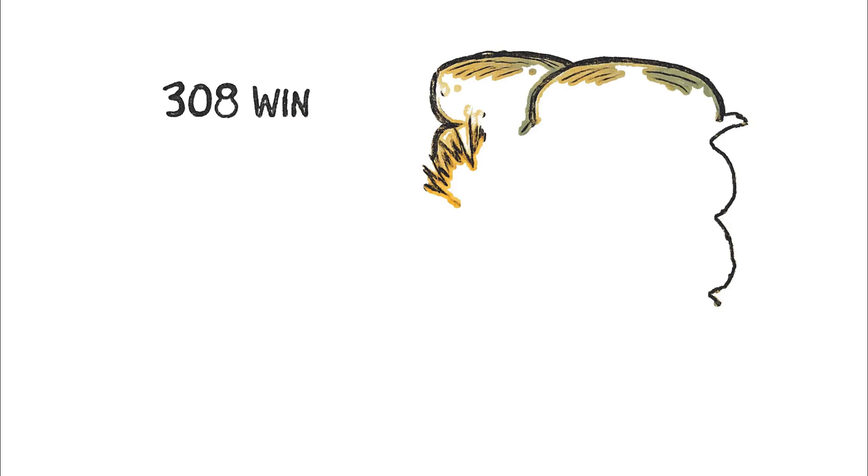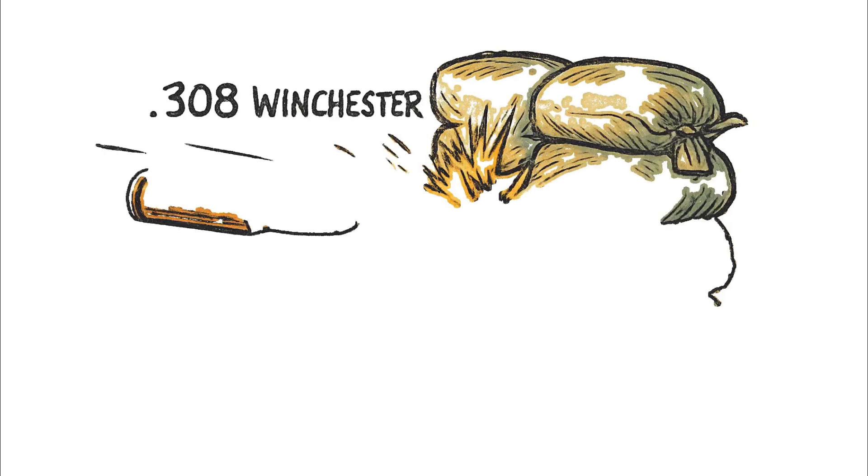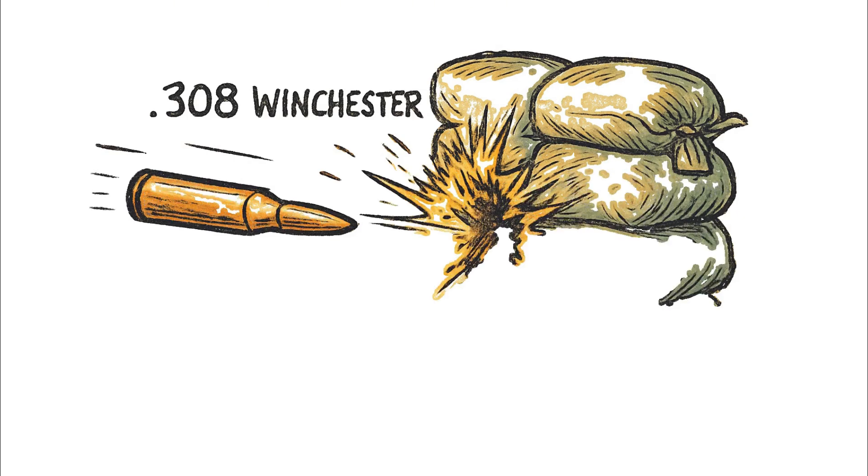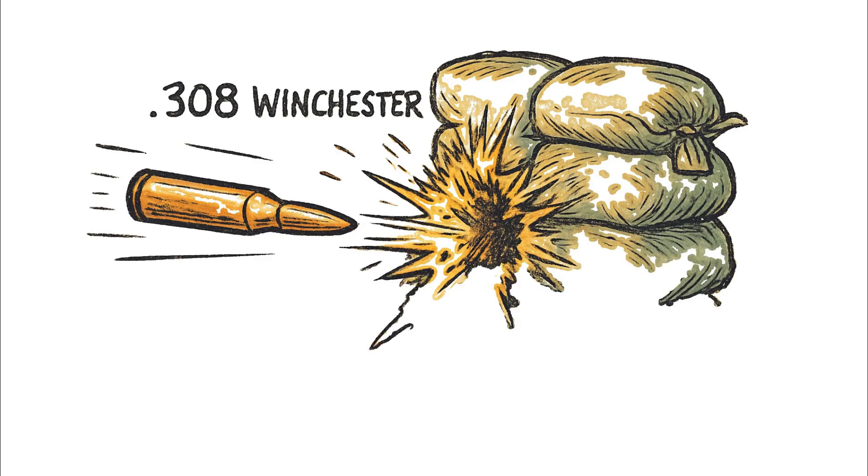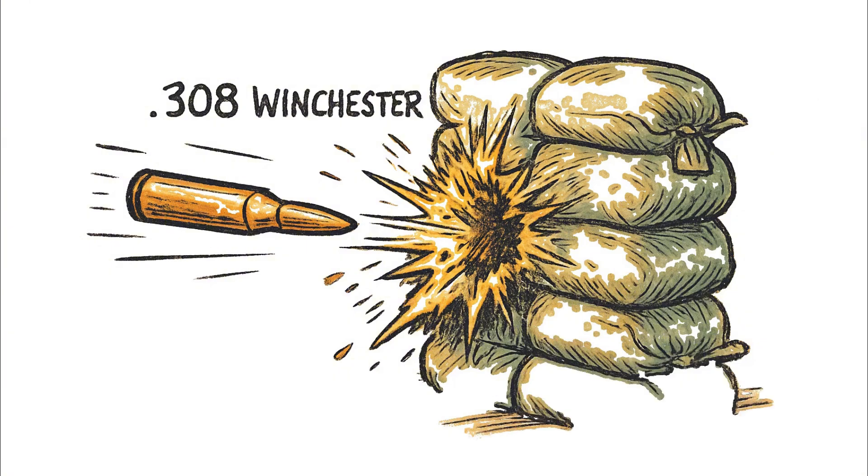But the analysis isn't complete yet, so we escalate the scenario with a .308 Winchester round, a full-power rifle cartridge. Where the 5.56 is a scalpel, the .308 is a sledgehammer, built to carry massive energy over long distances. And if the flaw was critical with the 5.56, it is going to be absolutely devastating here, with the trajectory once again aligned with the seam.